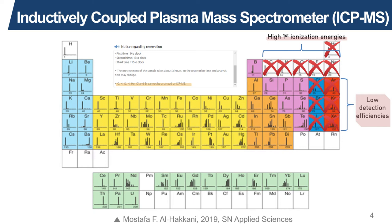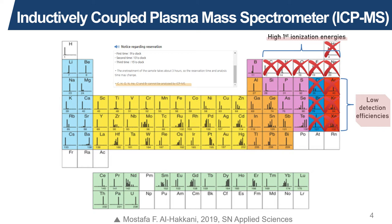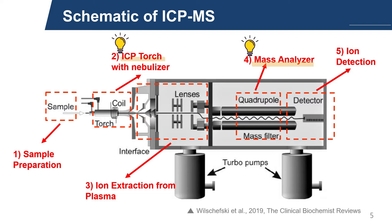Now moving on, we take a closer look into the working principles of the ICP-MS. First, you would of course need to adequately prepare your samples. Let's say you're studying the composition of particulate matter in our atmosphere using the ICP-MS technique. After collecting the specimen, you would first need to dissolve the solid dust particles in strong acid or alkali. This is because dissolved samples not only reduce matrix effects, but also reduce blockage in the nebulizer.